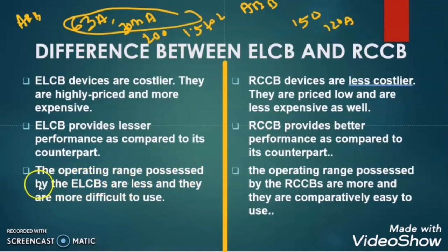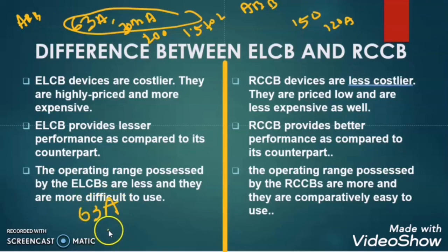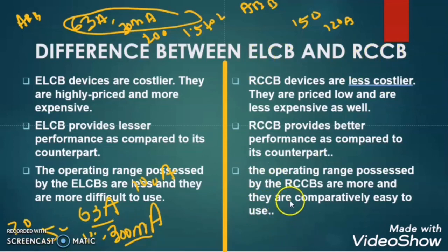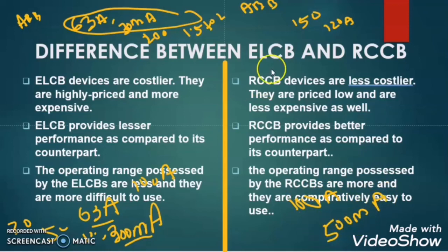The operating range of ELCB is less, while the operating range of RCCB is greater. The ELCB is commonly found up to a maximum of 63A and 300mA sensitive range, with very few at 100A. The RCCB is easily found up to 100A and up to 500mA. So the RCCB has a greater range of operation than the ELCB.